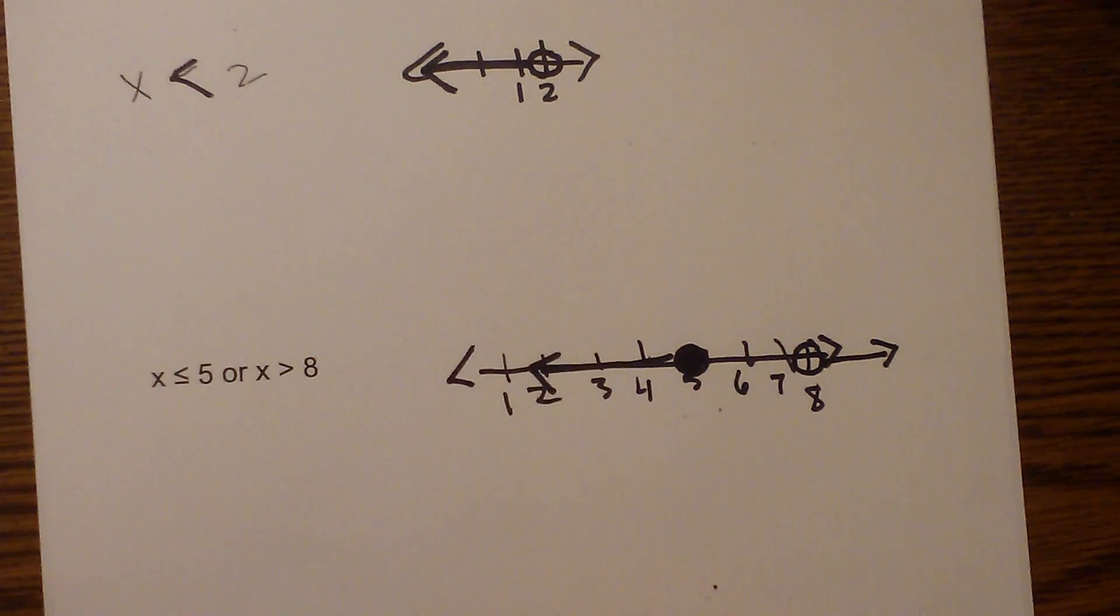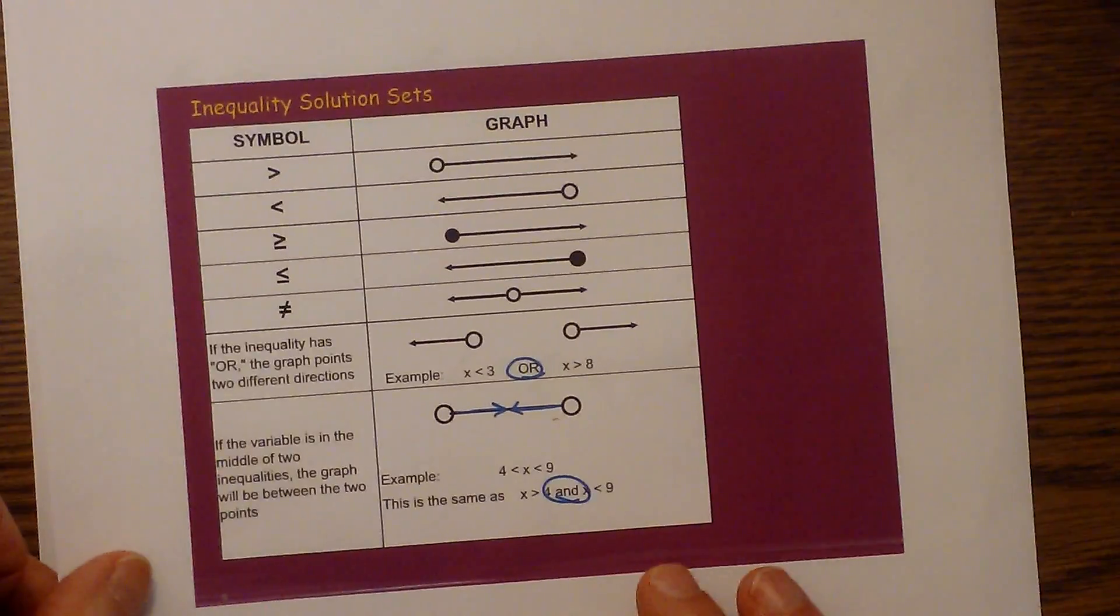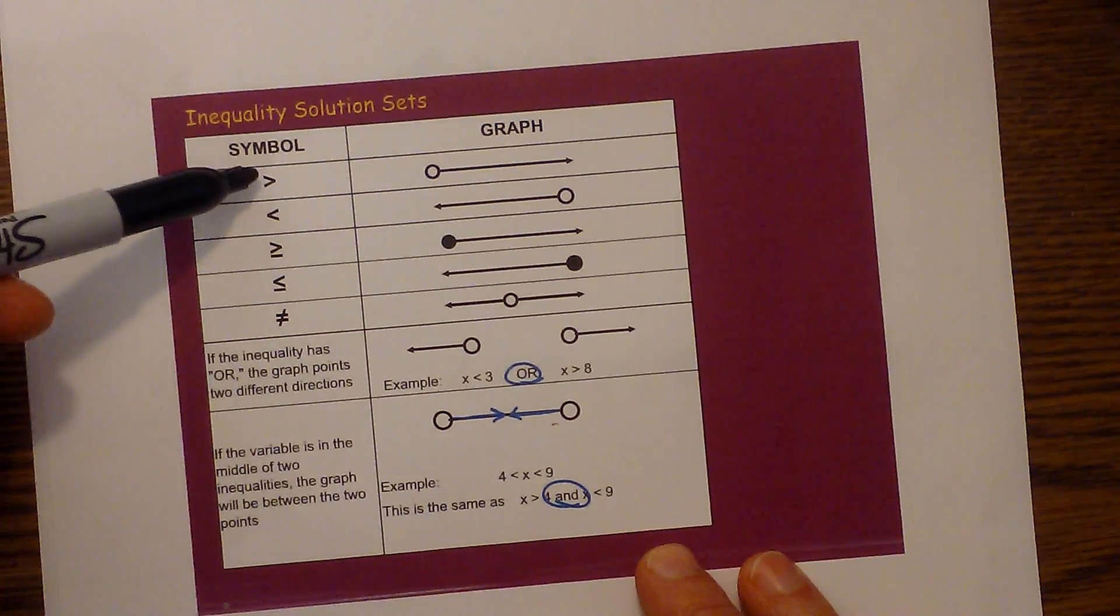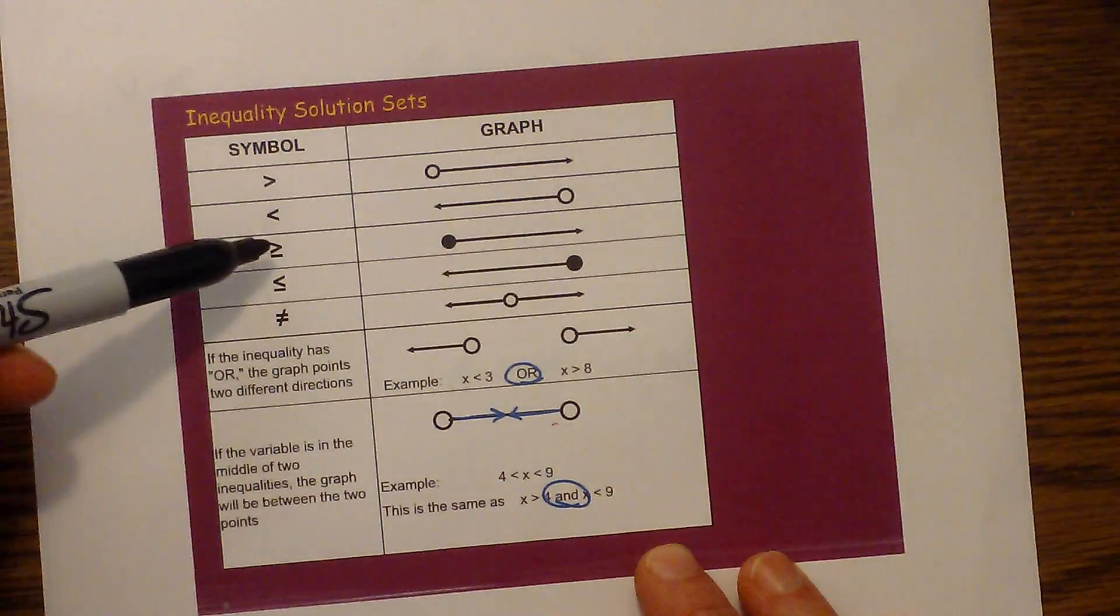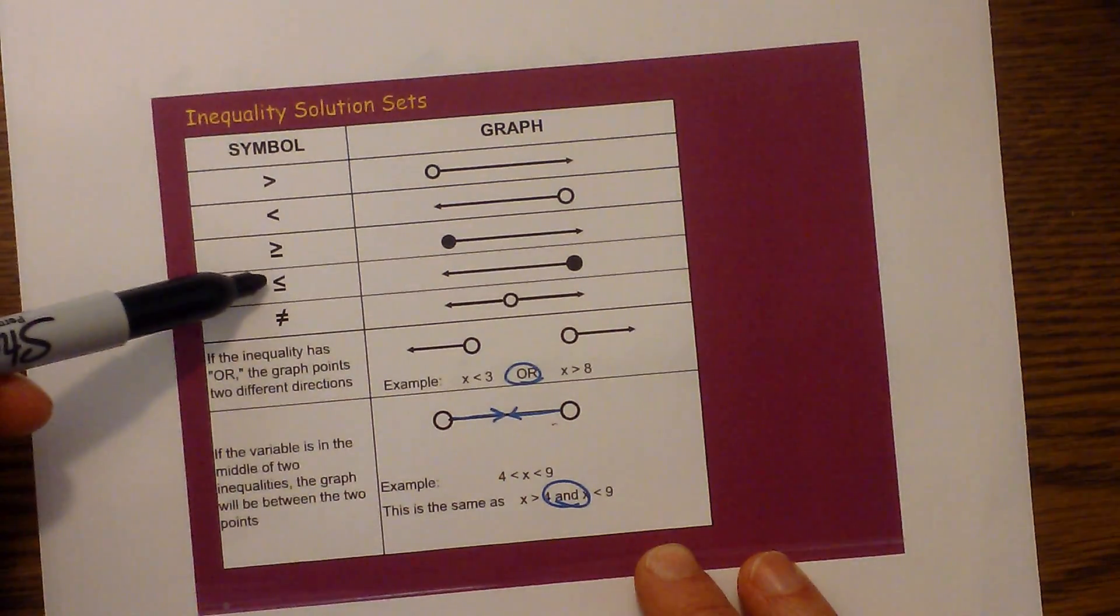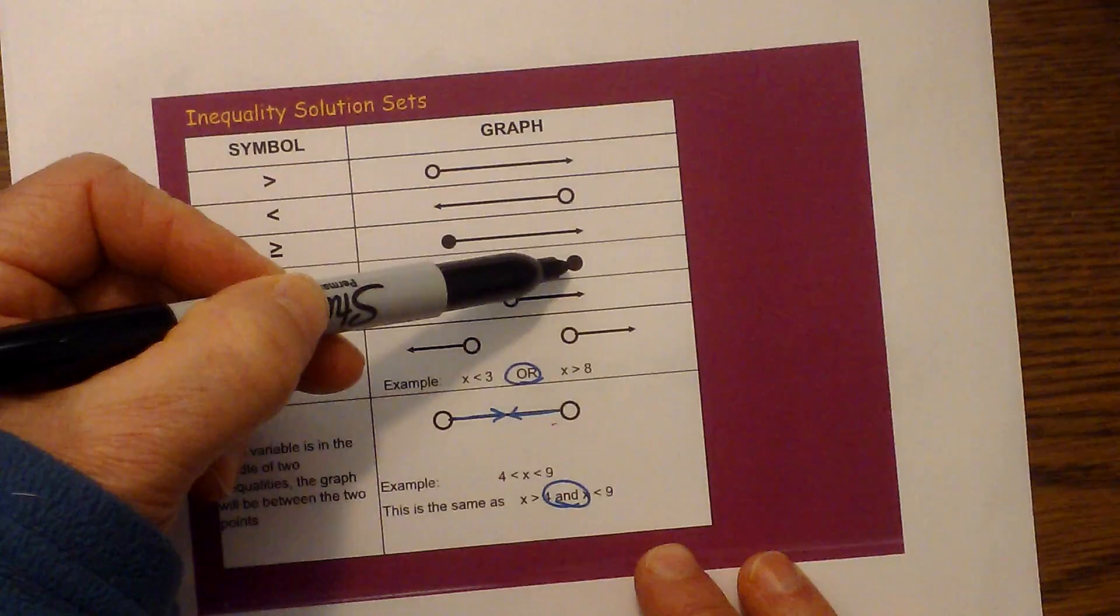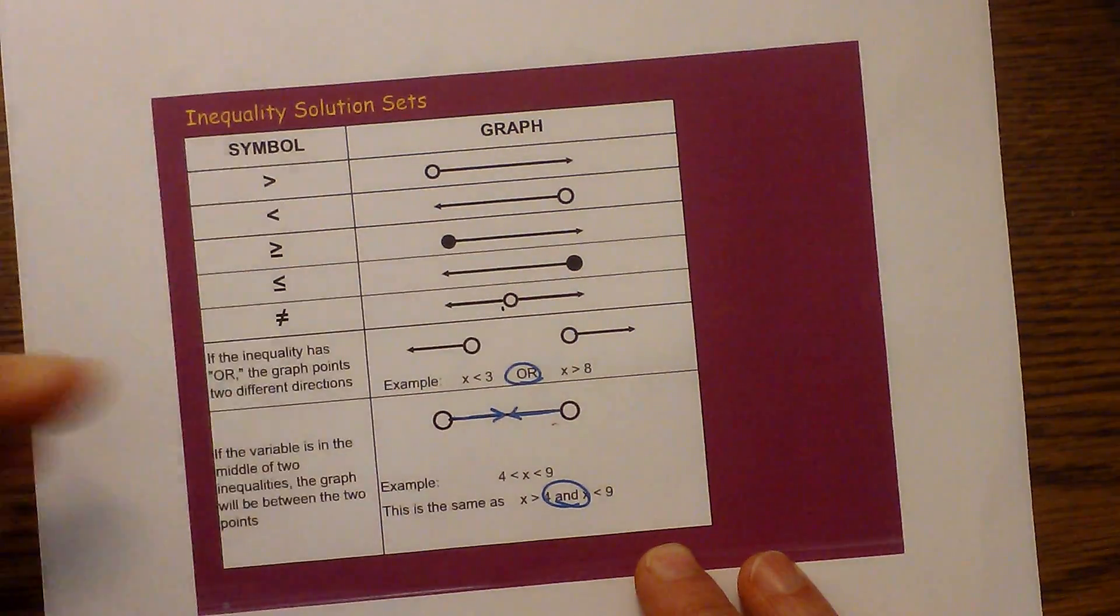I hope that helps with graphing inequalities. Let me go over this one more time, just as a quick review. Remember, if it is greater than, it is open, less than, open, greater than or equal to, it is closed, less than or equal to, it is closed. And I didn't go over not equal, we have the open.